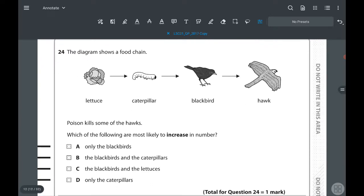24th one: the diagram shows a food chain. Poison kills some of the hawks. Which of the following are most likely to increase in number? If the number of hawks decreases, we know the blackbird number can increase. If the blackbird number increases, then the caterpillar number reduces, so we know the lettuce number can also increase. The answer has to be the blackbird and the lettuce, answer C.